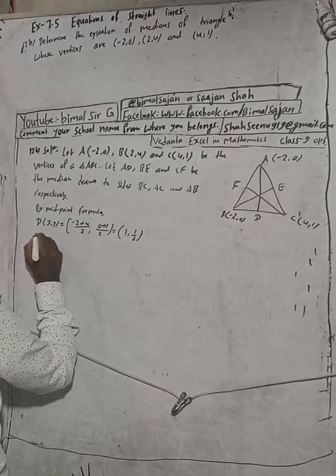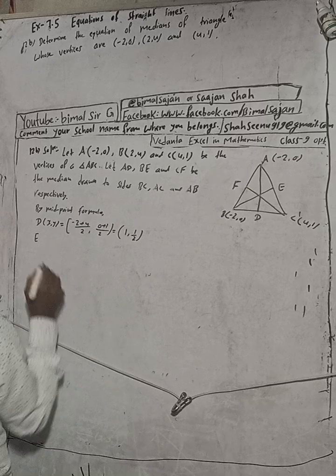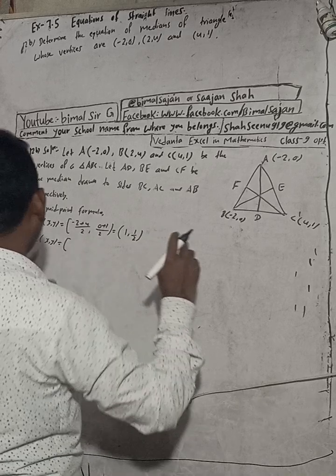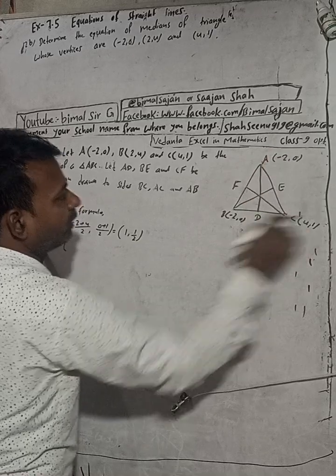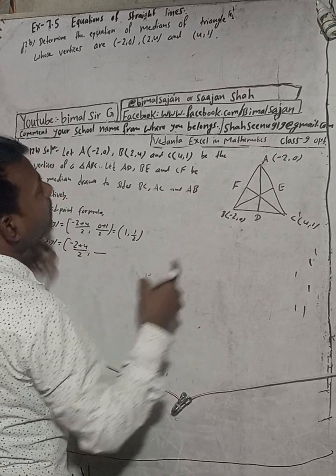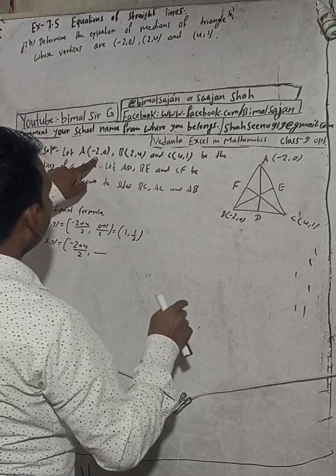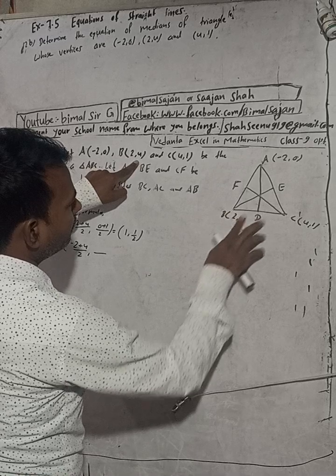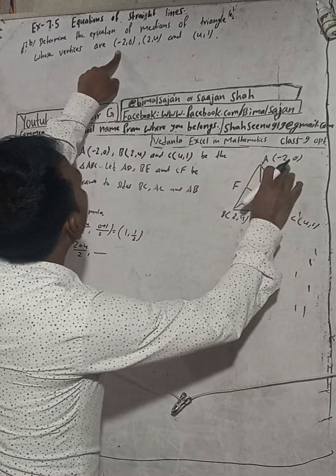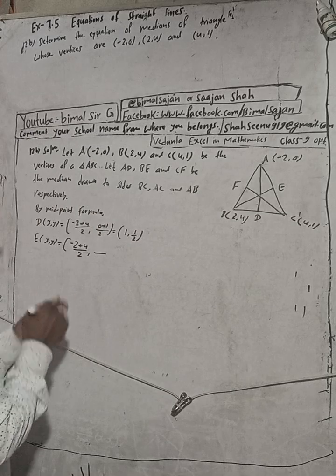This D point is (1, 1/2). Wait — let me correct this. The D point is the midpoint of BC. B is (2, 4) and C is (4, 1). A is (-2, 0), B is (2, 4), and C is (4, 1). We made a mistake, because D is the midpoint of BC.